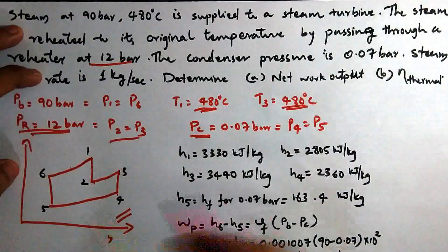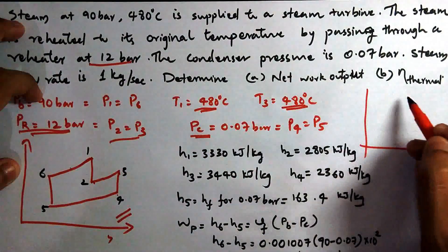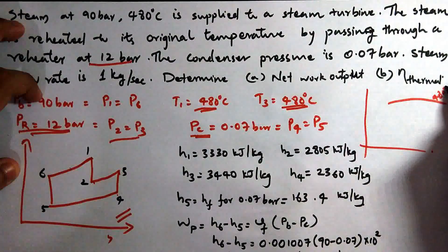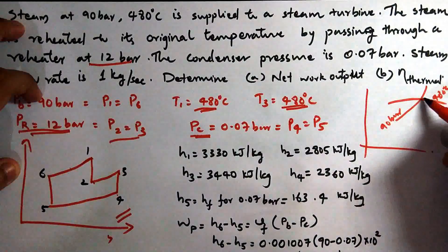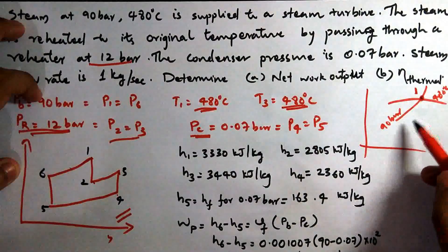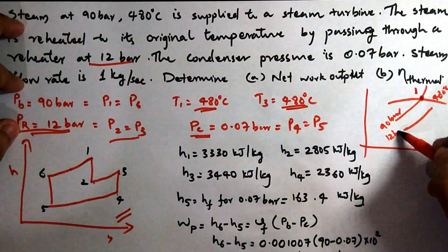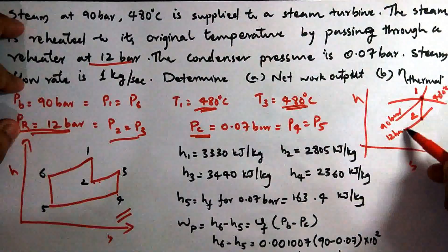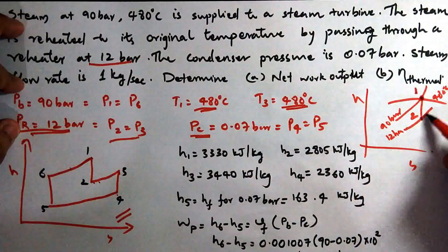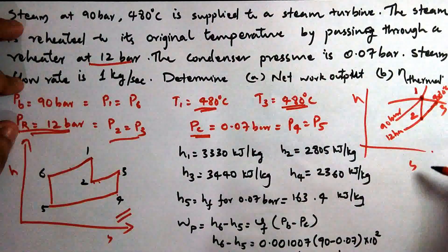We now plot the H-S diagram for this problem. First, we locate point 1 at 90 bar and 480 degrees Celsius — we find the 480-degree-Celsius temperature line and the 90 bar pressure line and mark point 1. Then we draw a vertical isentropic line down to the 12 bar reheat pressure line to get point 2. From point 2, we move along the 12 bar constant pressure line up to 480 degrees Celsius to get point 3. From point 3, we draw another vertical isentropic line down to the 0.07 bar condenser pressure line to get point 4.